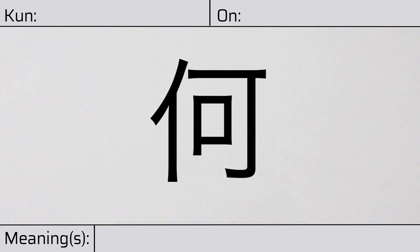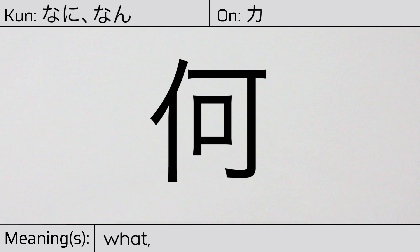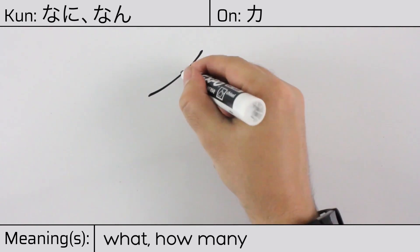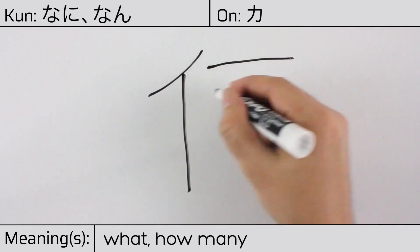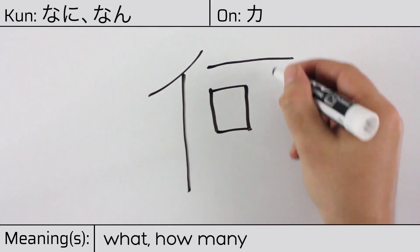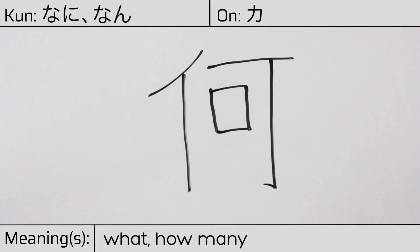Welcome to this lesson on Japanese kanji. Today, we'll be discussing this character. This kanji has kunyomi or Japanese readings of nani or nan, and it has onyomi or Chinese readings of ka. This character has the meanings what or how many. Here is the stroke order. This character is made up of the following radicals or parts.